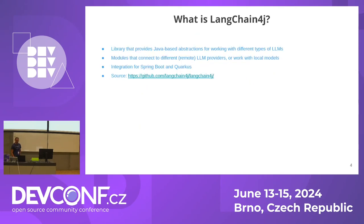So what is LangChain4j? It's a library that provides Java-based abstractions for working with LLMs. You can use it with LLMs served locally on your laptop or in your organization's infrastructure, or with models provided online like those from OpenAI. It has integrations for Quarkus and Spring Boot — I'll talk about Quarkus here because I'm not a fan of Spring Boot. It's open source, and here's the link where you can find the source.